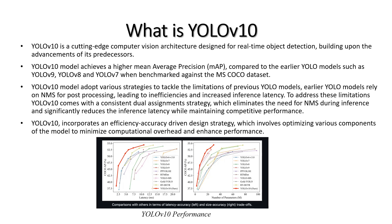Latency is basically the time taken to do object detection on an input image. We can see that YOLO V10 takes less time compared to other YOLO models — it can complete object detection on an input image or frame faster. Additionally, YOLO V10 gives good accuracy in comparison to other YOLO models.